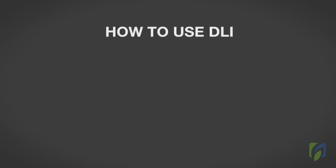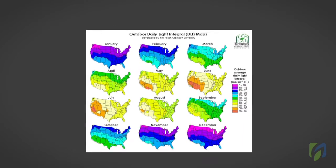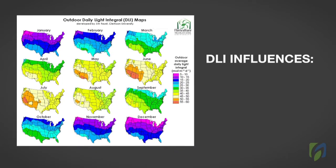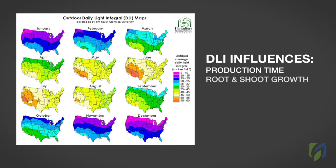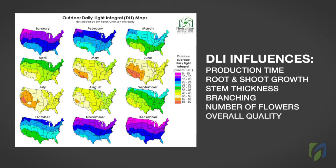How to use DLI. Purdue University has developed crop-specific daylight integral recommendations that are available online. Knowing the DLI is important because it influences production time, root and shoot growth of seedlings and vegetative cuttings, stem thickness, branching, number of flowers, and overall finish quality.